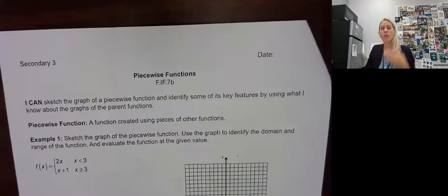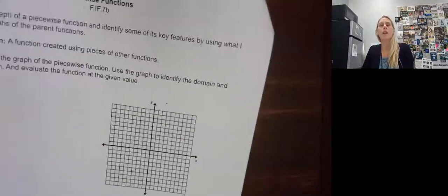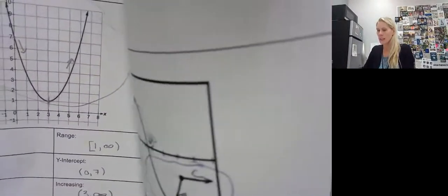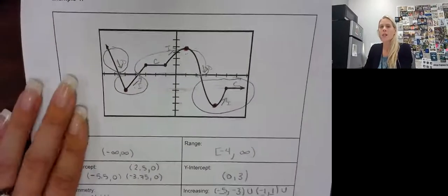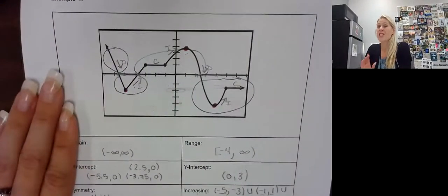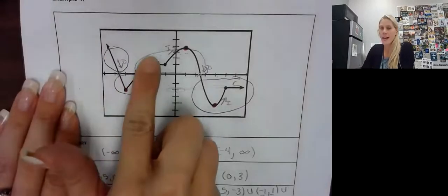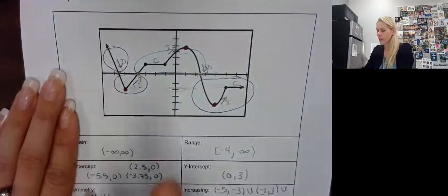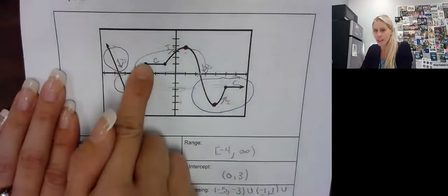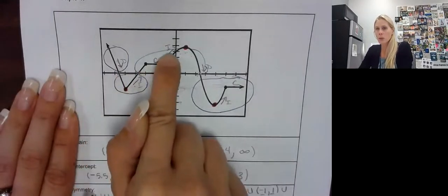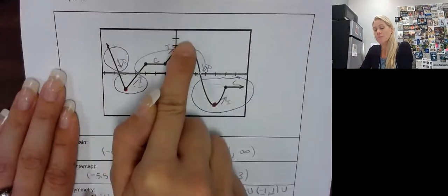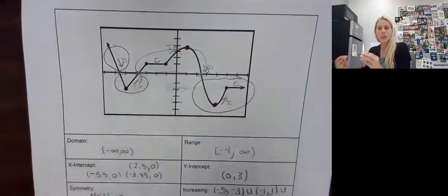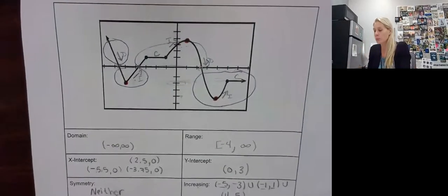So piecewise functions. Remember a function means that for every x there is only one y. Piecewise means that you have tons of functions in pieces. So this is a piecewise function and there are tons of functions here. This isn't an absolute value because they're not at the same slope. So this is a linear from here to here, another linear from here to here, constant from here to here, some sort of parabola — could be even cubic — another parabola and constant. See, it's pieces of multiple functions put together.